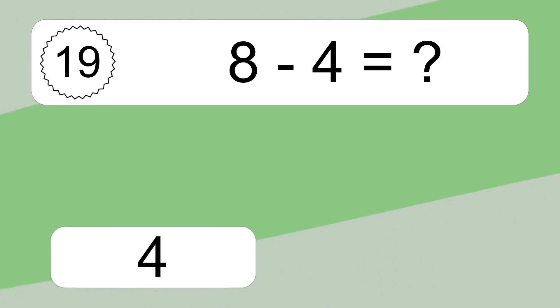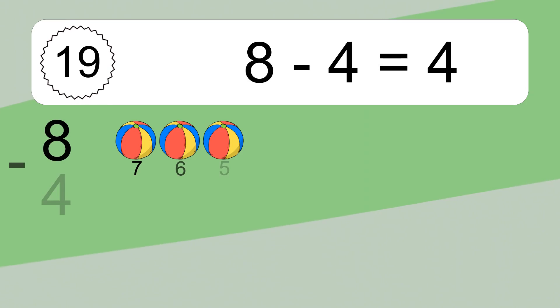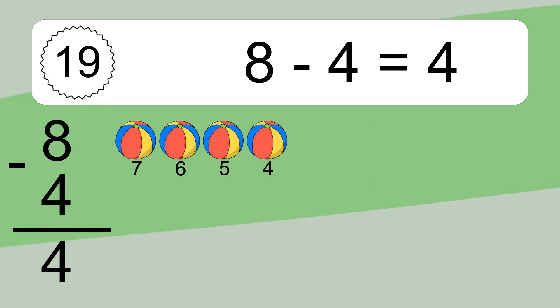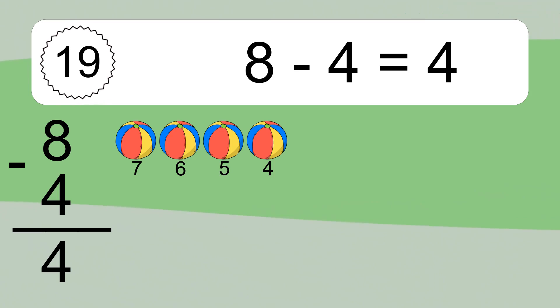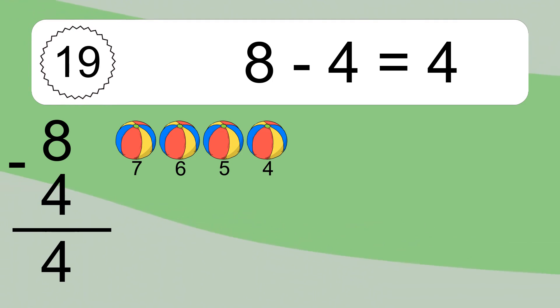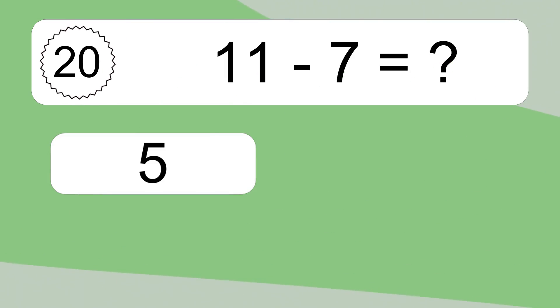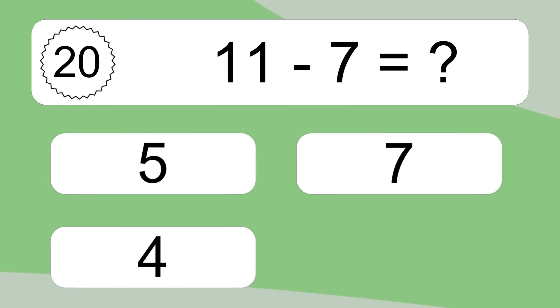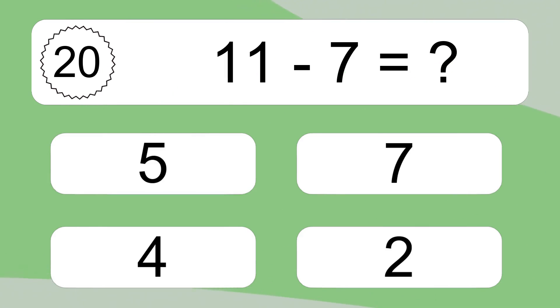8 minus 4 equals 4. Let's count it: 7, 6, 5, 4. 11 minus 7 equals what?